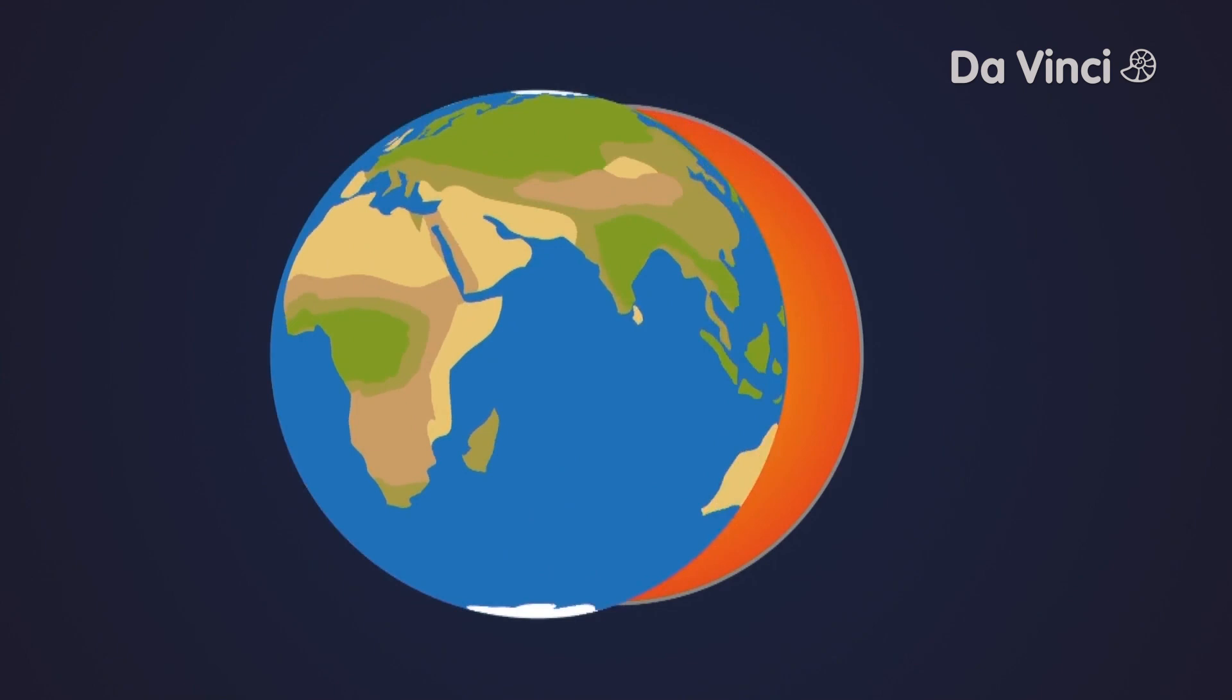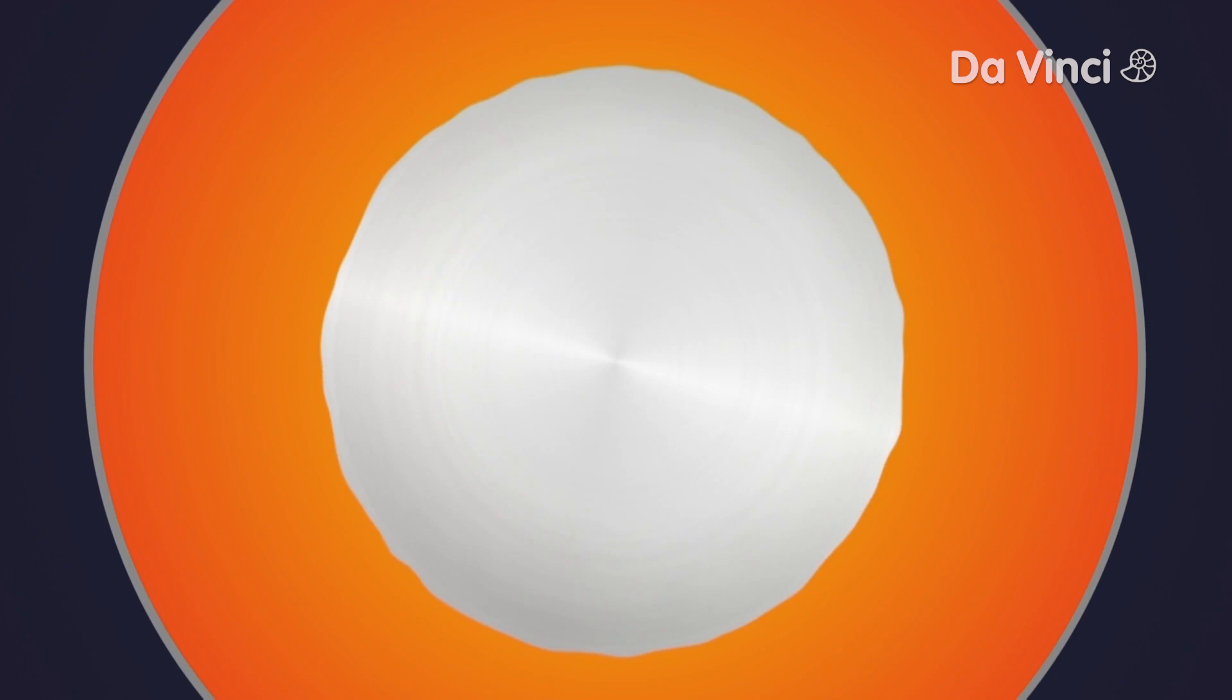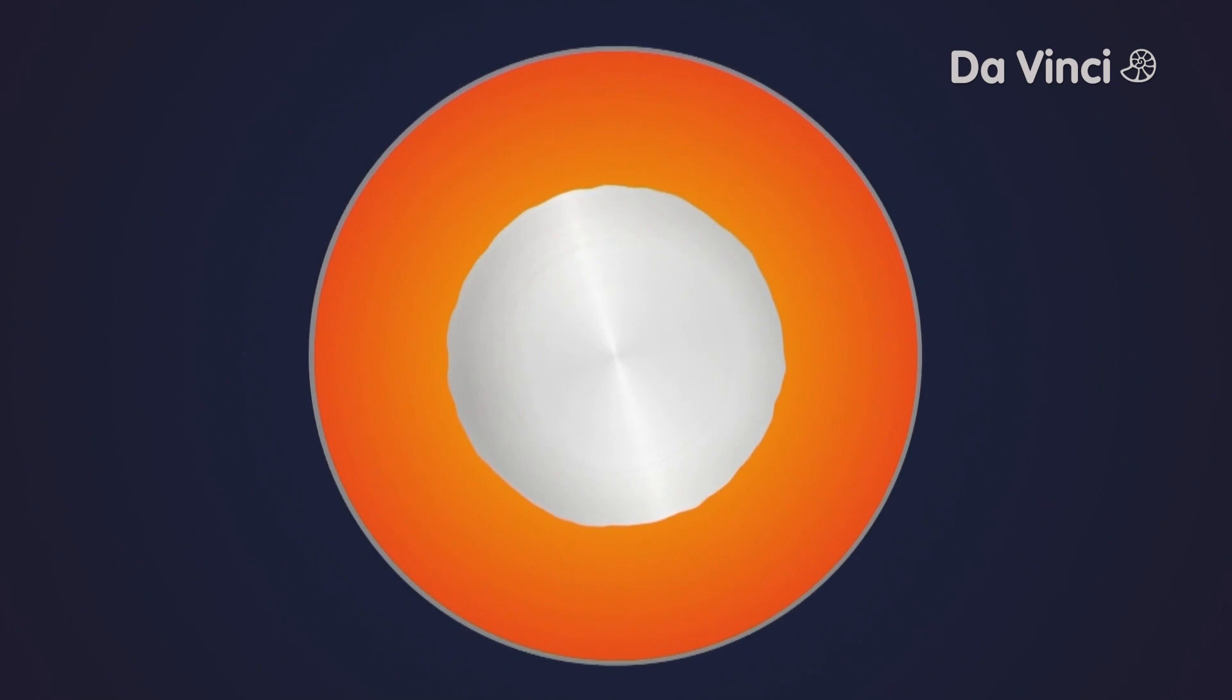Its core is a huge sphere made of rotating nickel and iron. The rotation produces electricity, and wherever electric current is flowing, there also is an invisible magnetic field.